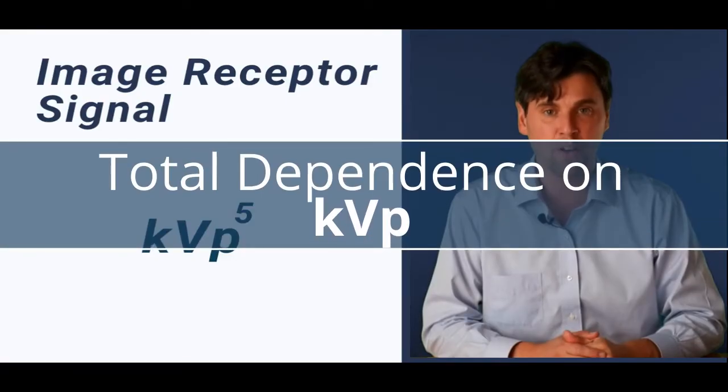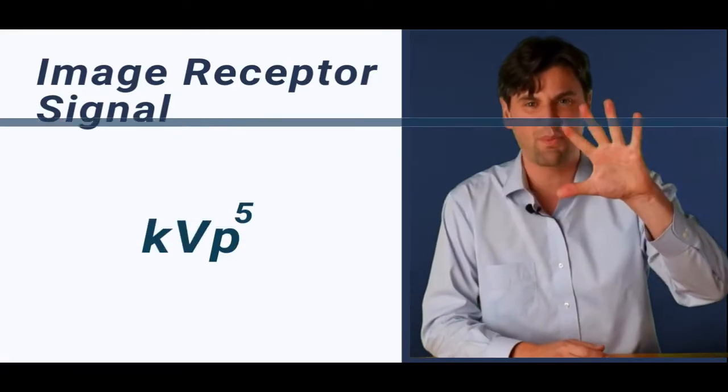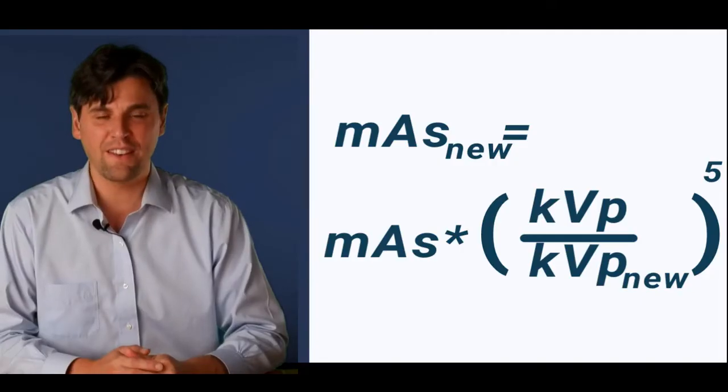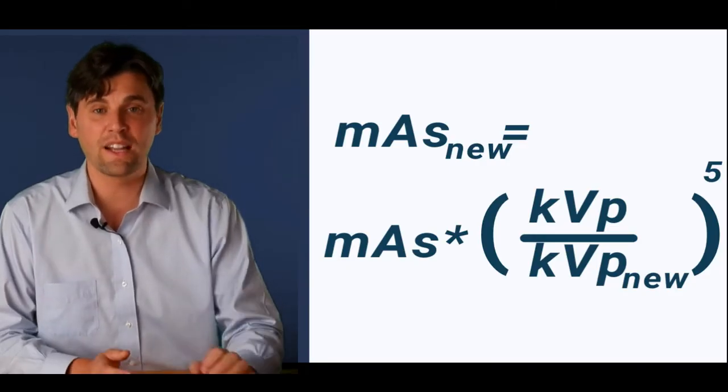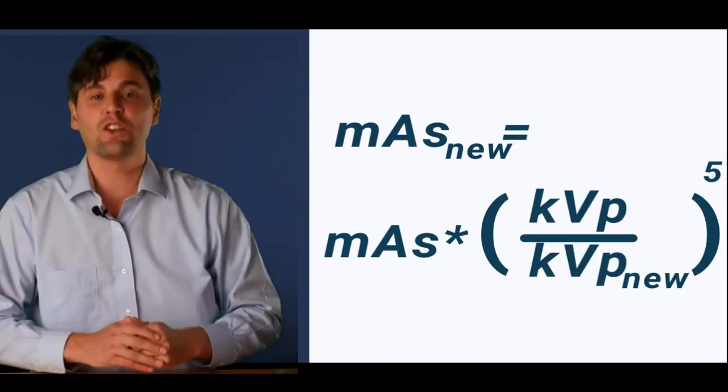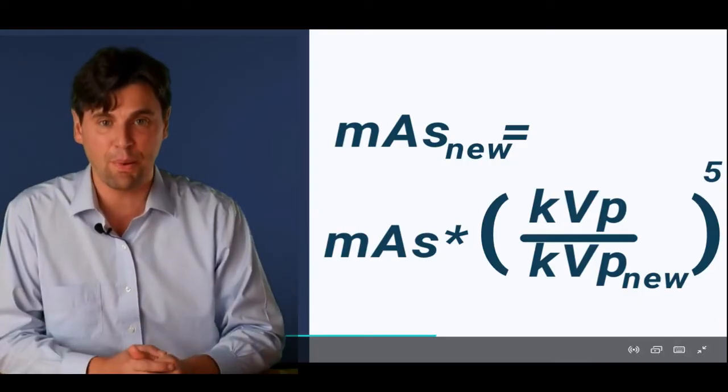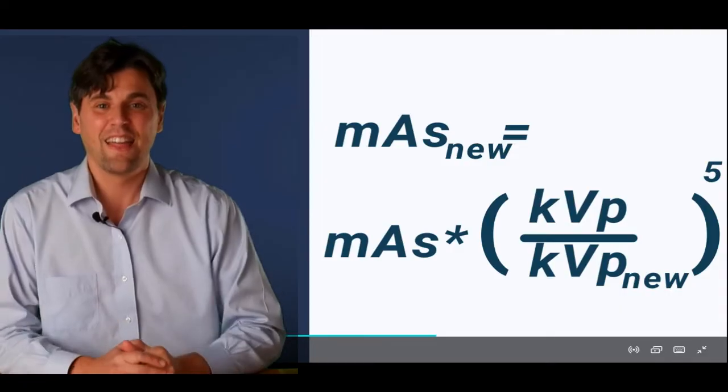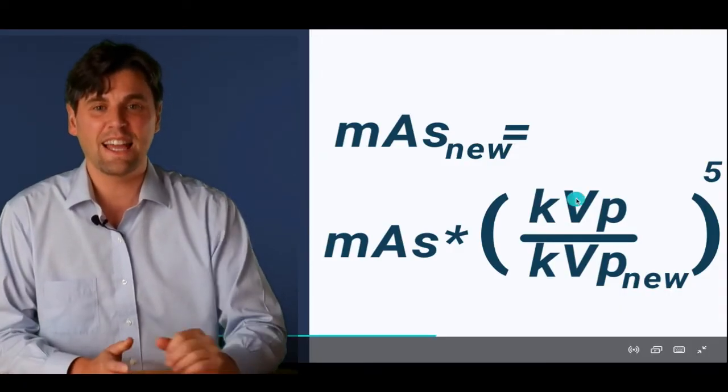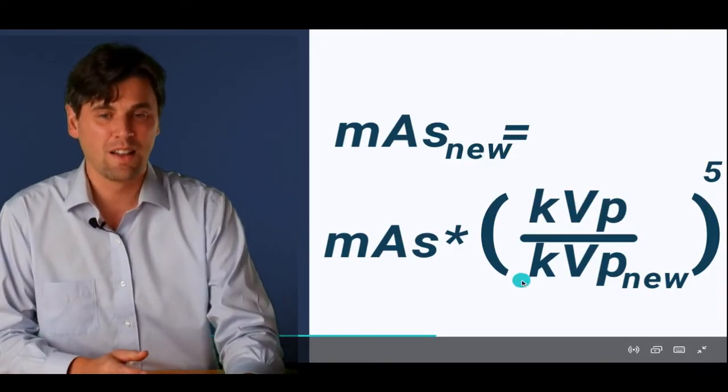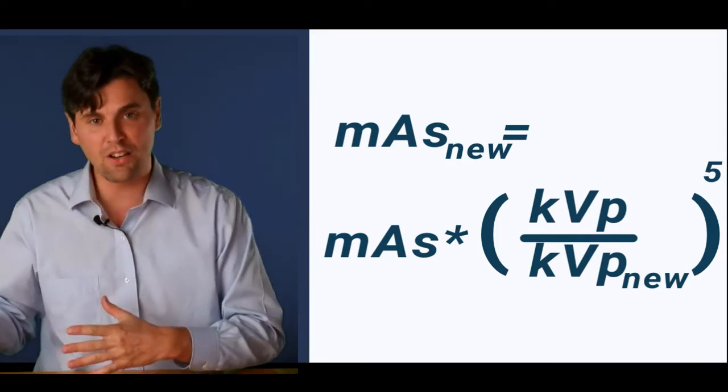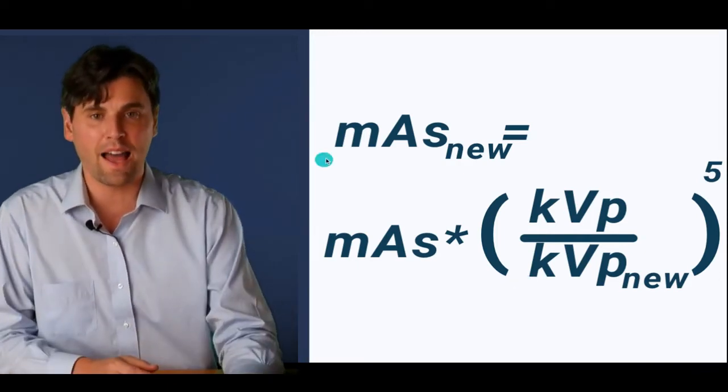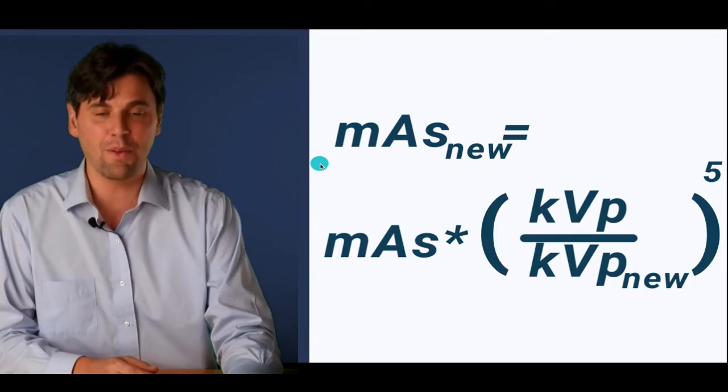Measured at the image receptor goes roughly like KVP to the fifth power then. You're changing your protocol from you have a given MAS in your protocol and then you need to change the KVP from KVP to KVP new. Then you want to calculate the MAS new.